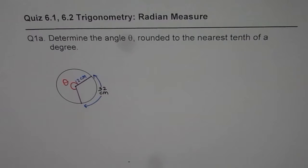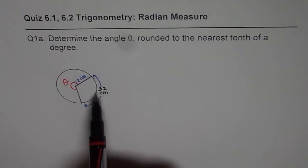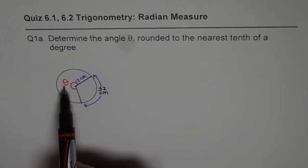Determine the angle theta rounded to the nearest tenth of a degree. The diagram is given to you, so in this we are given radius of 12 centimeters, arc length of 32 centimeters, and that's the angle theta which we need to find.